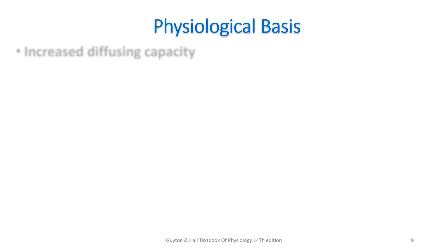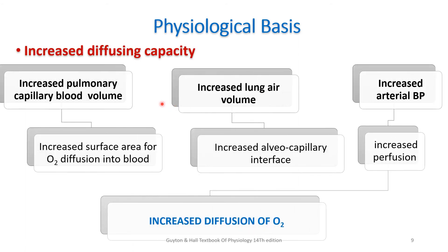The next point was increased diffusing capacity of the lung. This is due to increased pulmonary capillary blood volume, increased lung air volume, and increased arterial BP. Because of these, there is an increased surface area for oxygen diffusion into the blood. The increased lung air volume results in increased alveolo-capillary interface, and the increased arterial BP results in increased perfusion. Because of all these causes, there is increased diffusion of oxygen, so whatever oxygen reaches the lung is easily diffused into the blood.